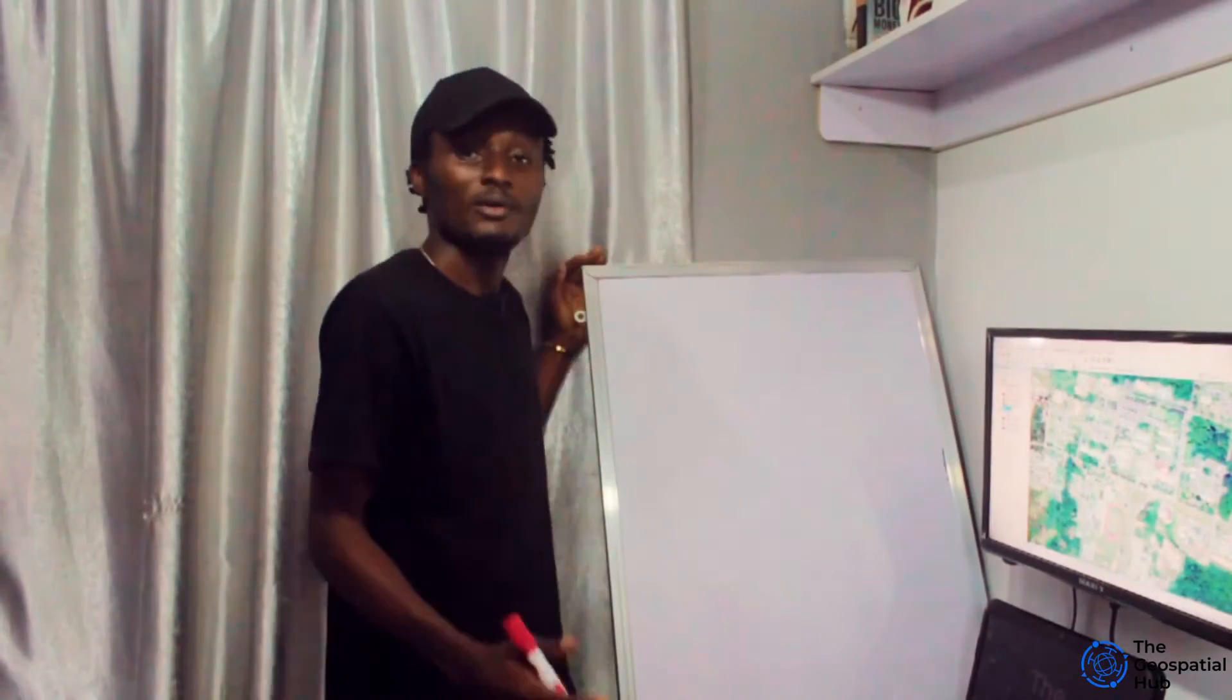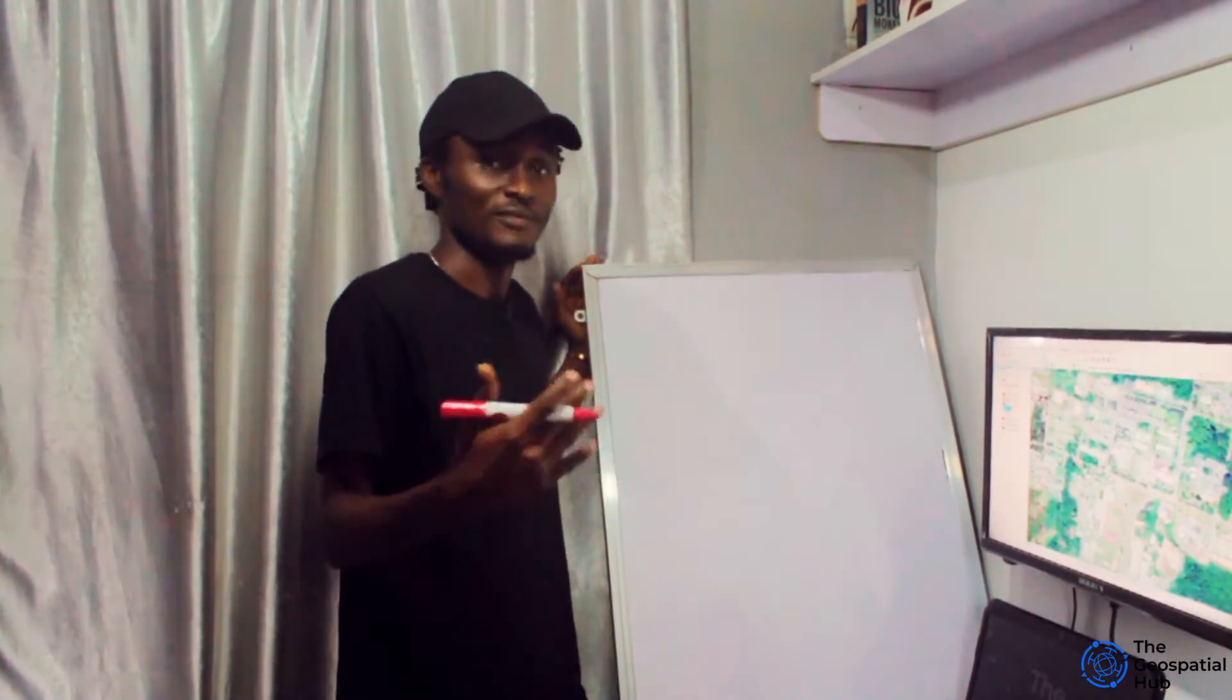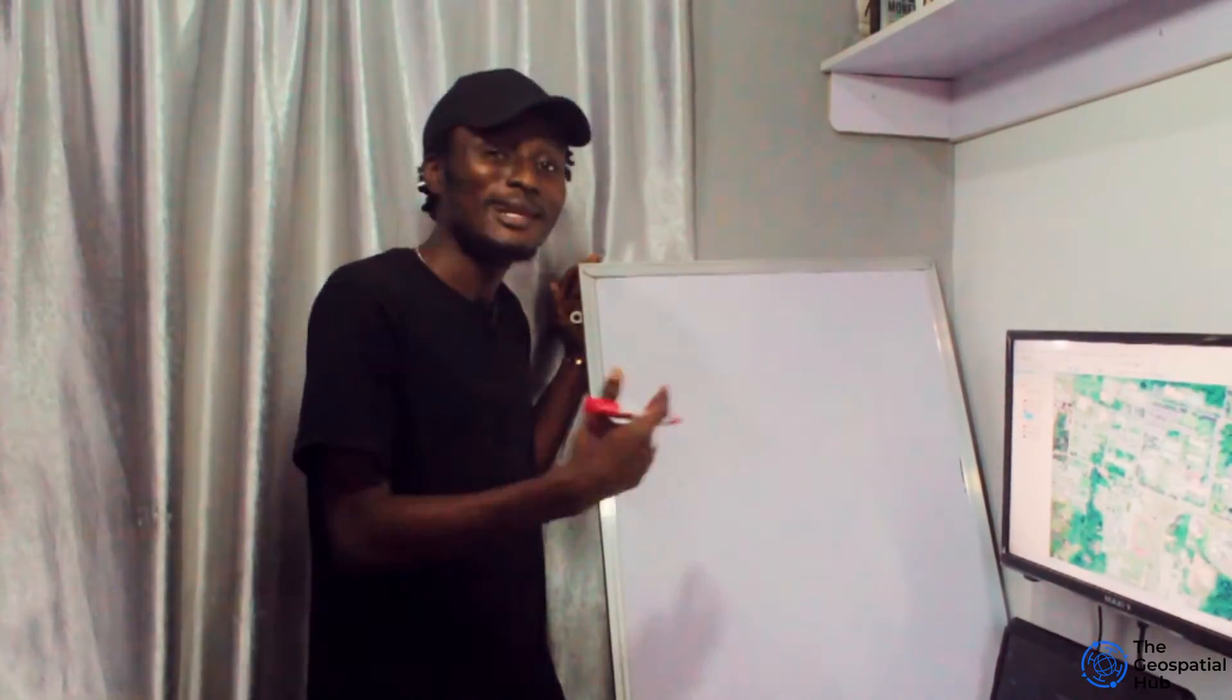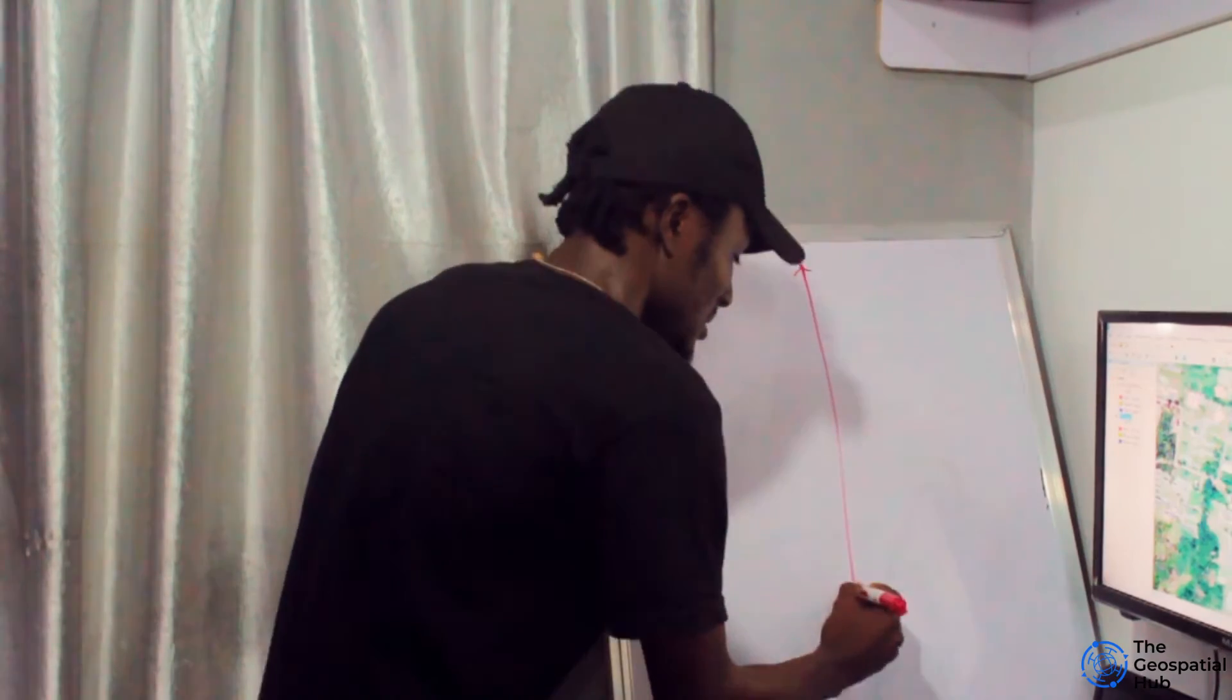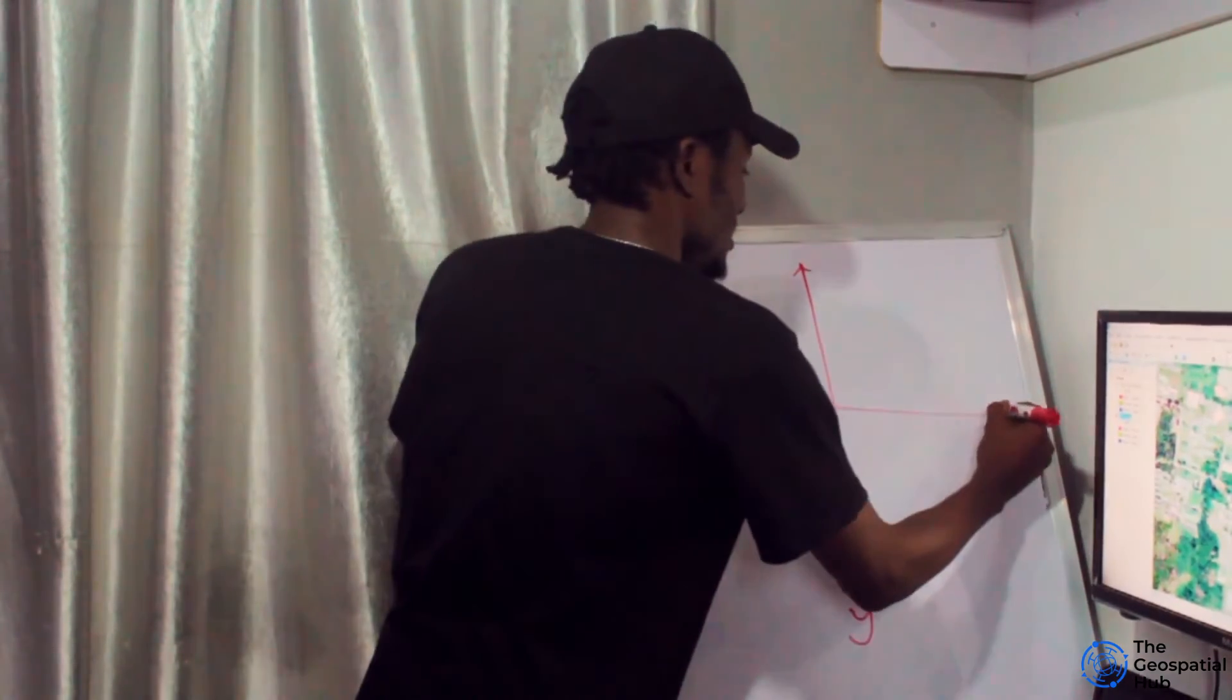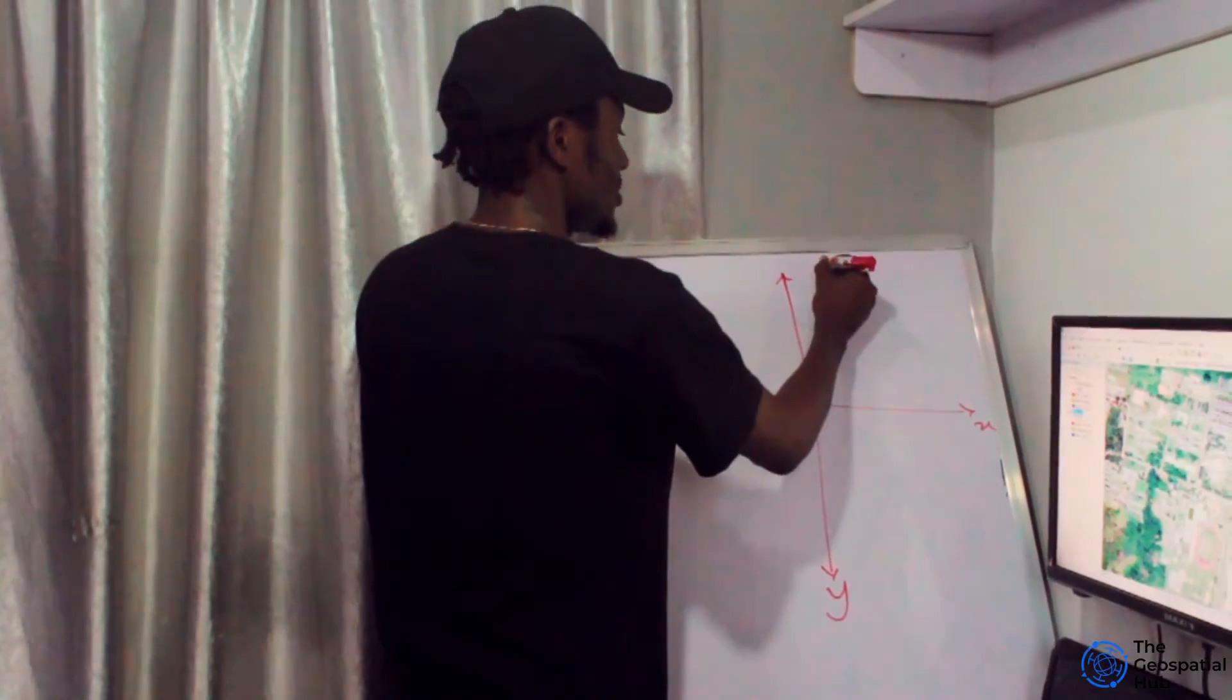To better understand how we use latitude and longitude on a flat map, I'll draw a plane coordinate system. Remember, this is our Y axis and this is our X axis. Now we have the longitude lines.